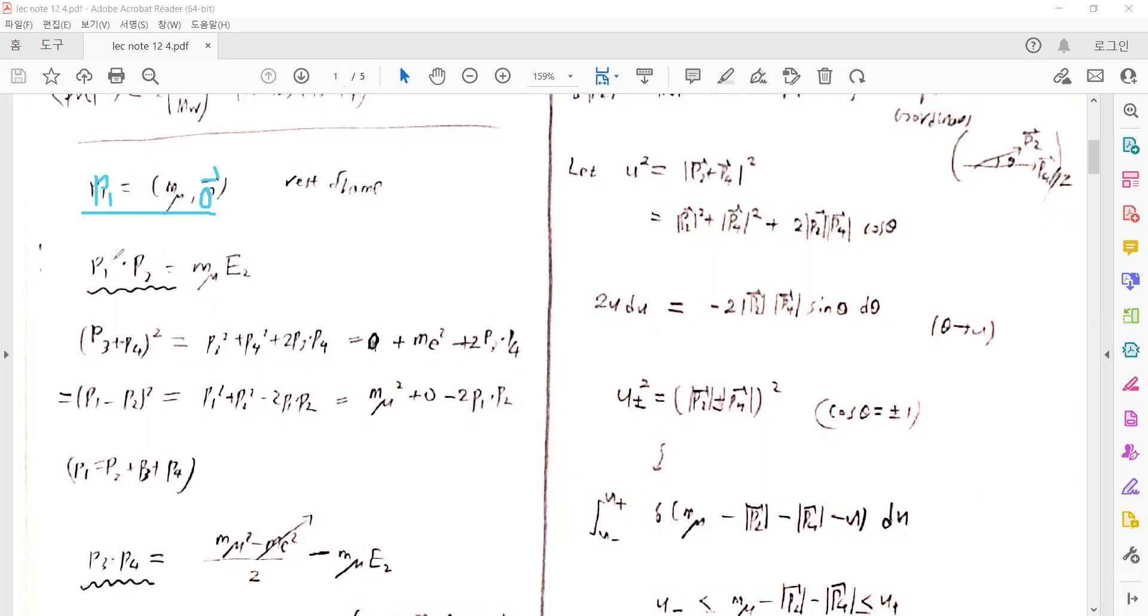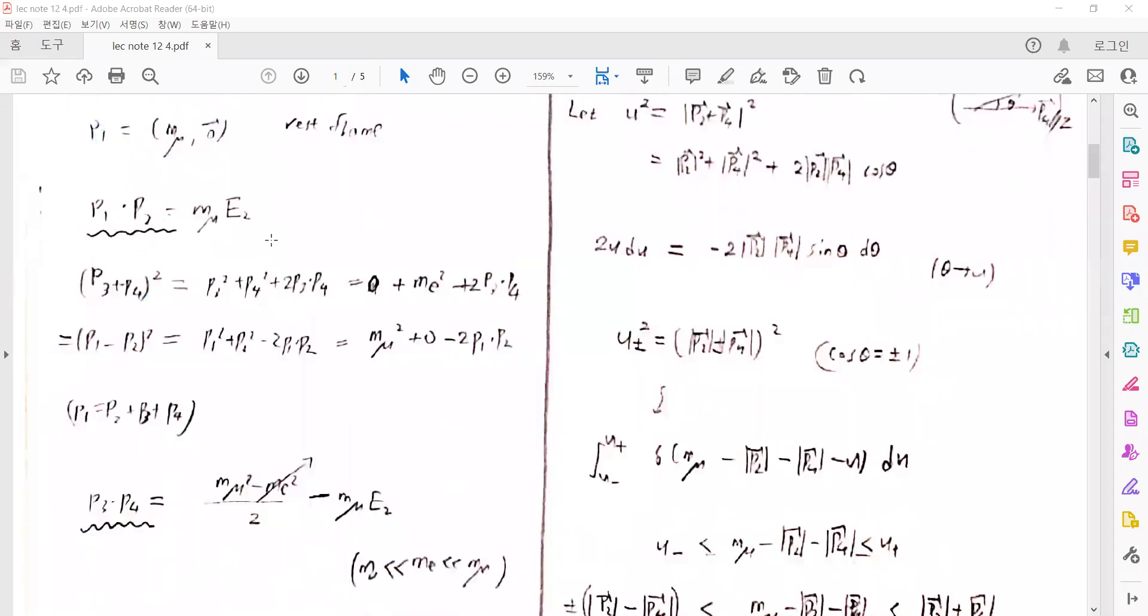We can calculate the products of momenta. For example, P1·P2 equals the muon mass times E2. We can calculate P3·P4 using similar techniques. If we calculate the P3 and P4 terms, and we use momentum conservation, P3 and P4 can be expressed in terms of P1 and P2, and we already obtained P1·P2. So we can express P4 in terms of the mass of the muon and the energy E2, where E2 is the emitted electron energy.